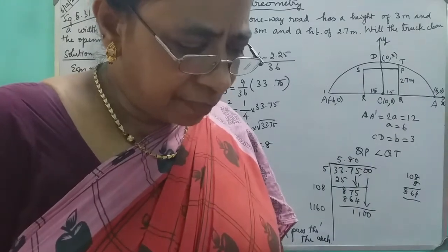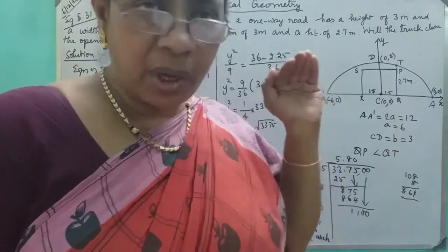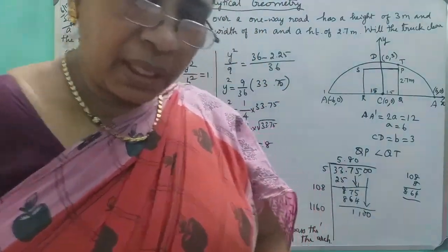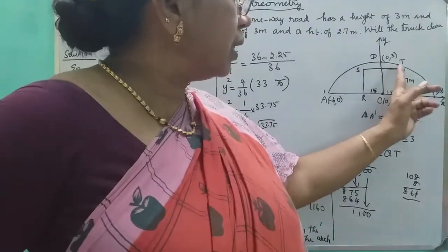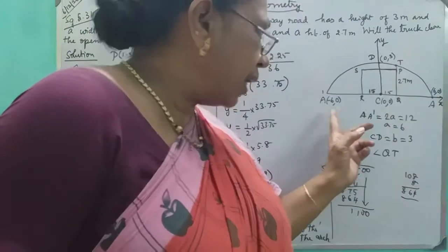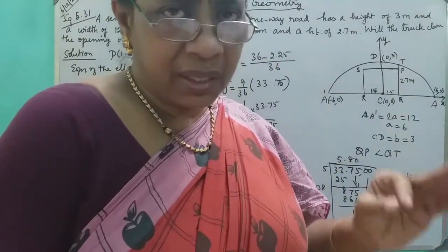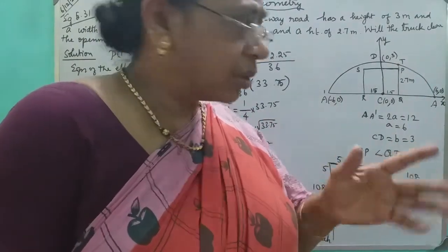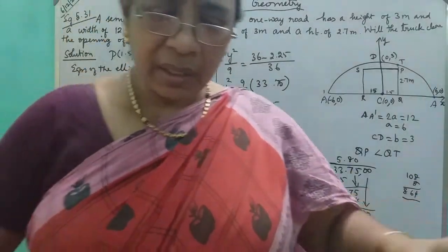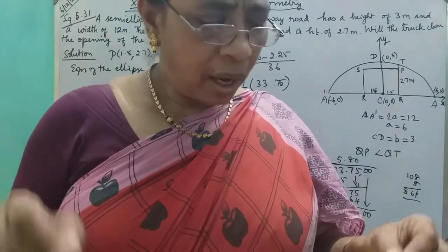Let me explain. Here is the archway to a road. The center is C, at the origin. The arch has a width of 12 meters total. AA dash means the major axis, which is 2a. So 2a equals 12, which means a is 6.